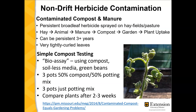Non-drift ways that herbicide can come into the garden include contaminated compost and manure. These herbicides are very persistent — they're sprayed on hay fields and pastures to control broadleaf weeds. Often what happens is that hay or pasture is sprayed, baled, fed to an animal, passes through the gut of the animal into manure, through the composting process, into the garden, and is then taken up by plants. Unfortunately, these herbicides can be very persistent — three or more years until they degrade in the soil.